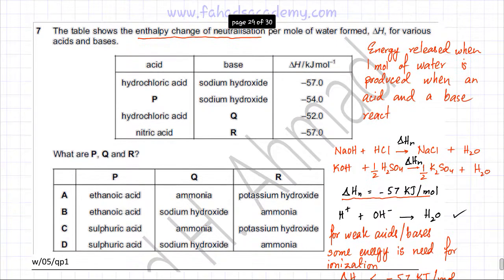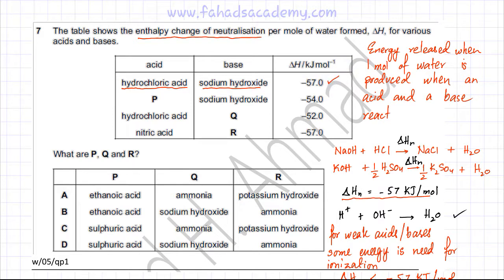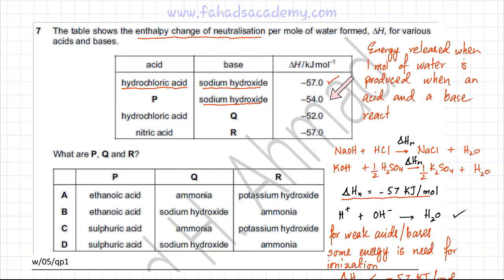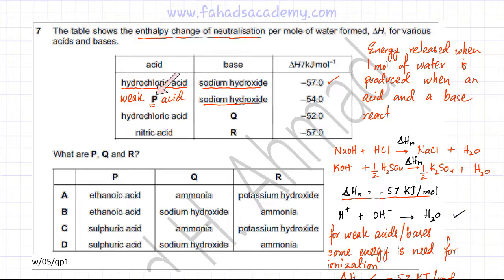Looking at the options: hydrochloric acid with sodium hydroxide (both strong) gives minus 57 kJ/mol. Acid P with sodium hydroxide gives minus 54 kJ/mol — less than minus 57 — which means P must be a weak acid. For hydrochloric acid (strong) reacting with base Q, the enthalpy change is minus 52 kJ/mol, less than minus 57, so Q must be a weak base. Nitric acid (strong) with base R gives minus 57 kJ/mol, so R must be a strong base.